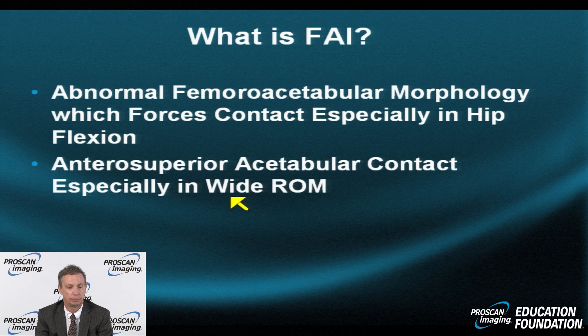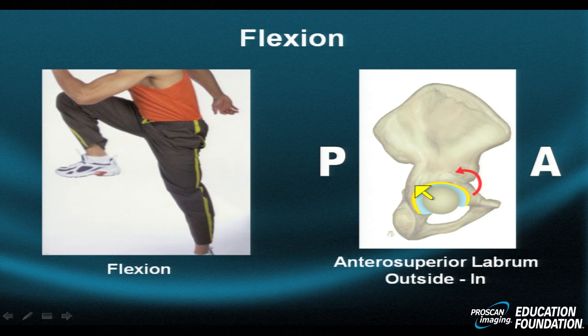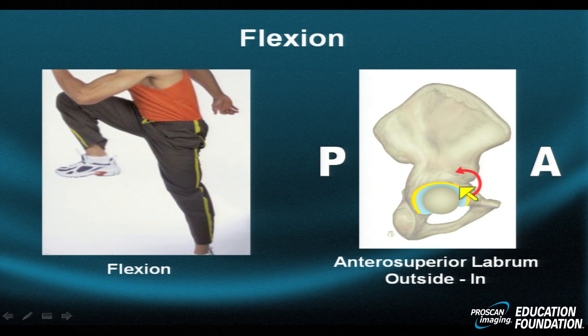What is FAI? It's abnormal contact between the femur and the acetabulum. The forces of contact produce excessive compression and shear effect, and the process is exacerbated with repetition and a wide range of motion. With hip flexion, when you bring your knee up towards your chin, you're taking your femur and rotating it backwards, bringing the femoral head-neck junction and the lower femoral head up and into the joint. If these structures are abnormally formed, they may abnormally shear or contact the joint, especially anterior and superior.